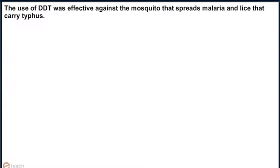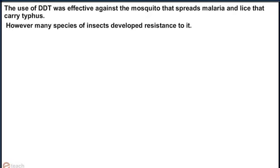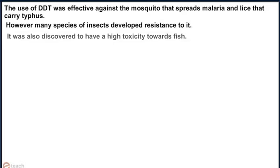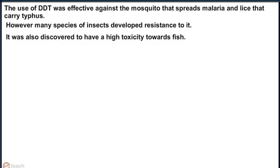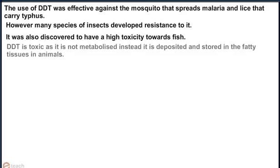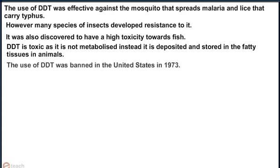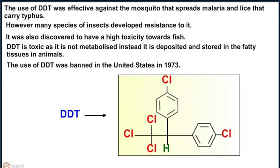The use of DDT was effective against the mosquito that spreads malaria and lice that carry typhus. However, many species of insects developed resistance to it. It was also discovered to have a high toxicity towards fish. DDT is toxic as it is not metabolized; instead it is deposited and stored in the fatty tissues of animals. The use of DDT was banned in the United States in 1973. The structure of DDT is shown in the figure.